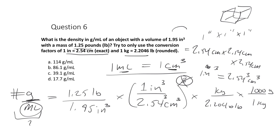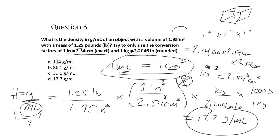So the calculation is: 1.25 divided by 1.95, divided by 2.54³, divided by 2.2046, then times 1000. That gives 17.7 grams per milliliter. That cubic centimeter equals one milliliter conversion is a key one — probably one most of us knew coming in the door.